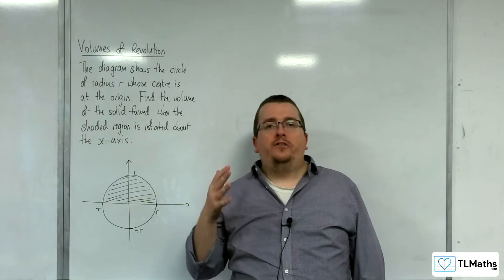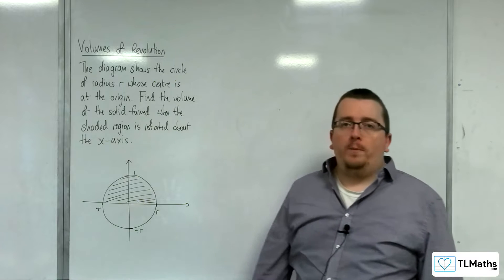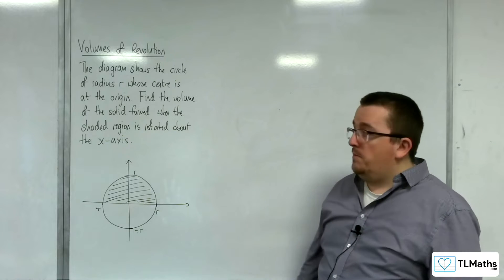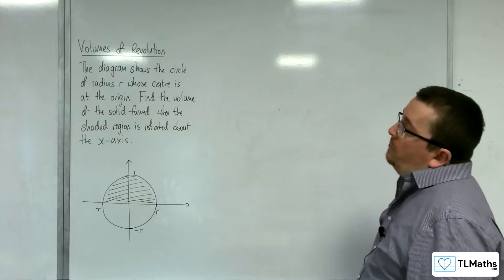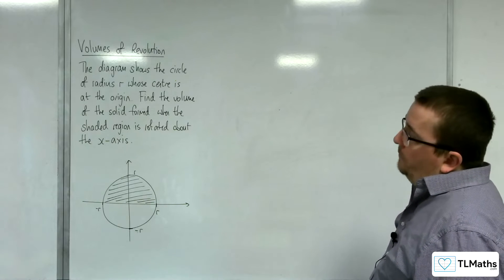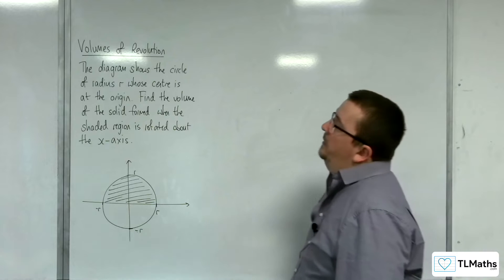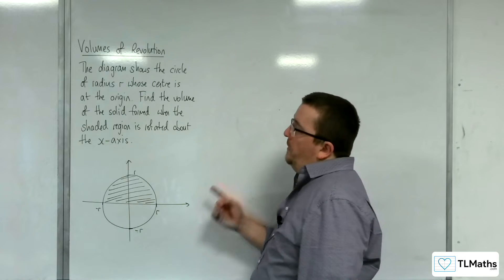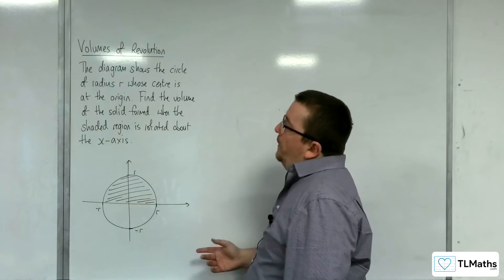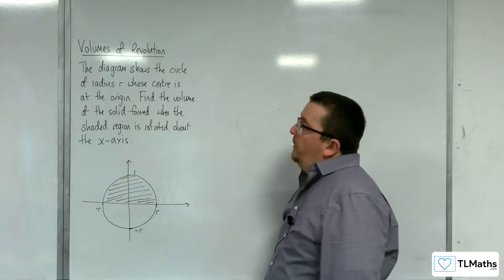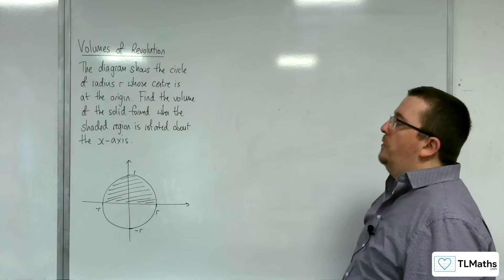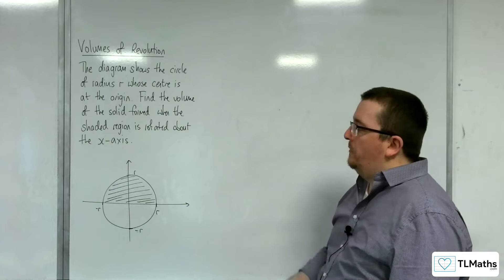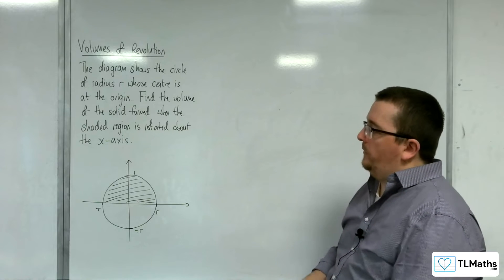In this video, we're going to derive the formula for the volume of a sphere. The diagram shows a circle of radius R, whose centre is at the origin. We need to find the volume of the solid formed when the shaded region is rotated about the x-axis.